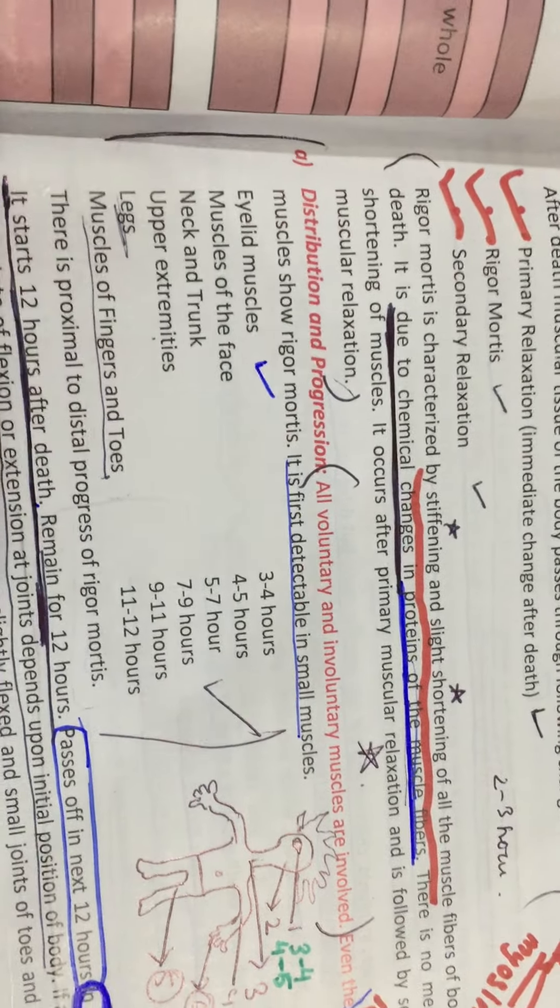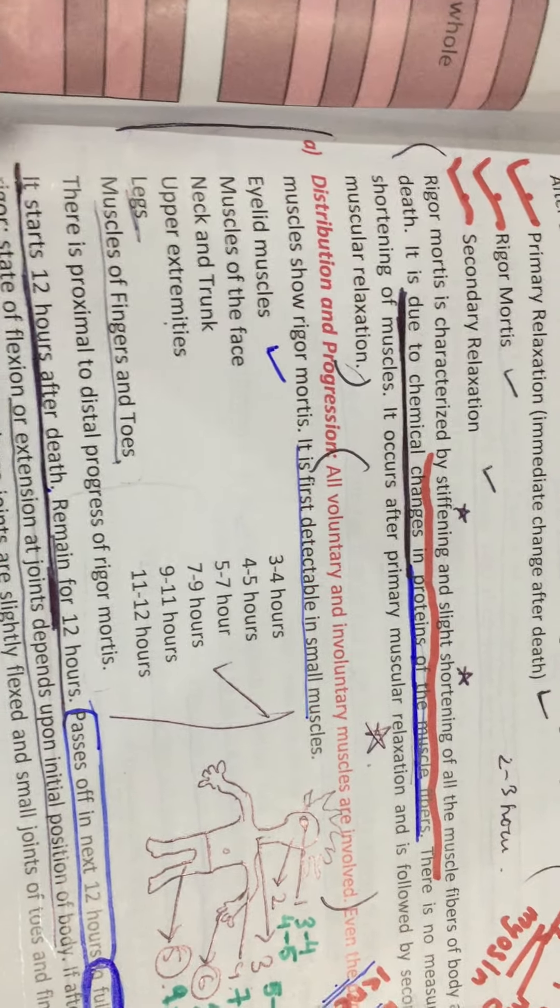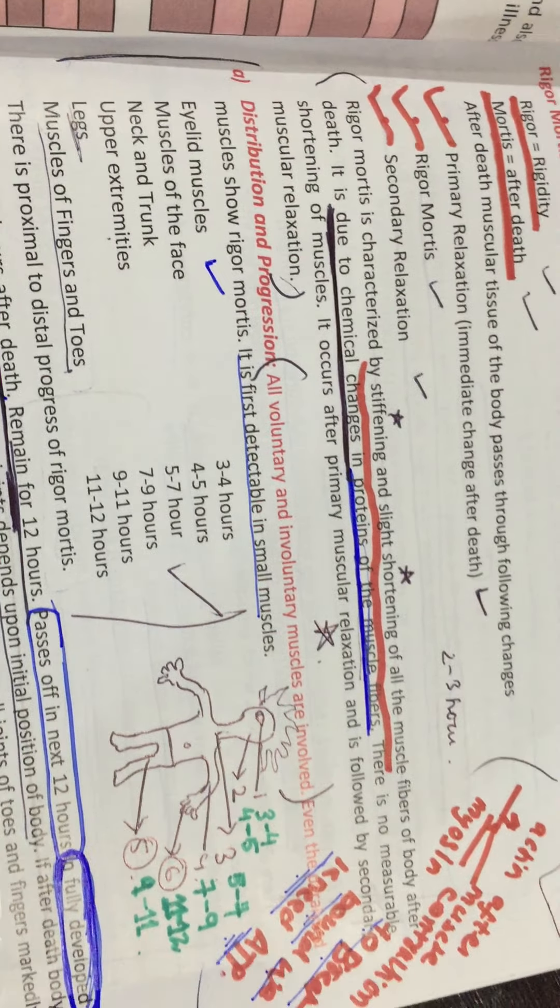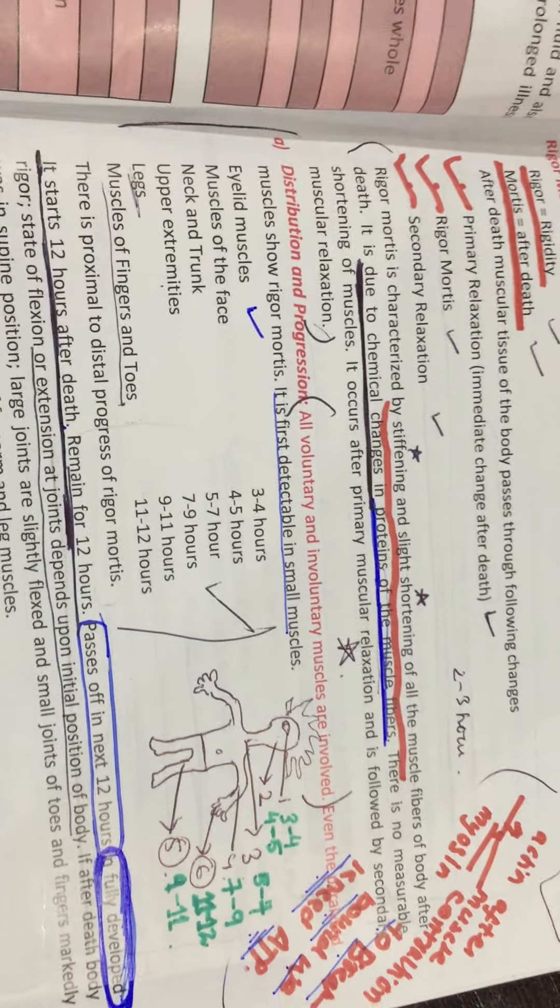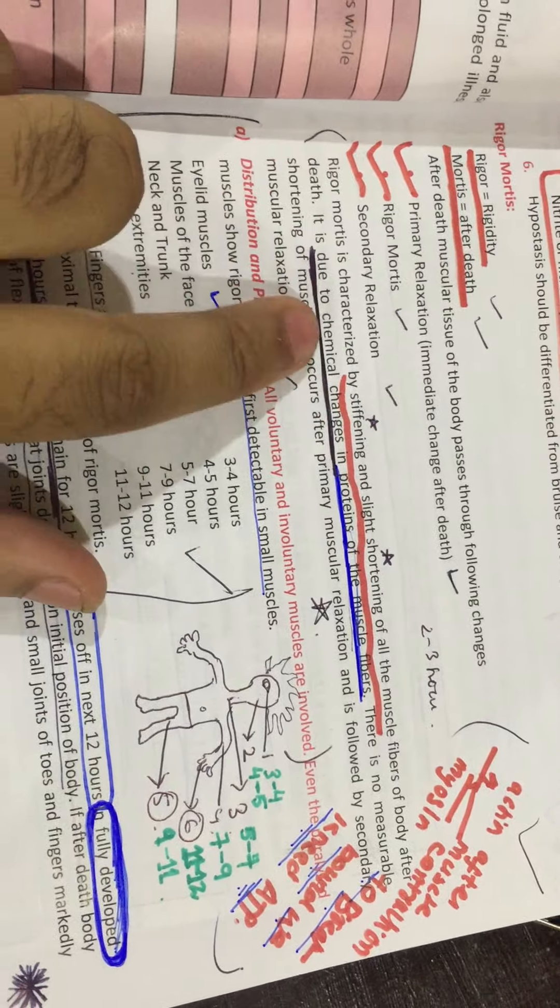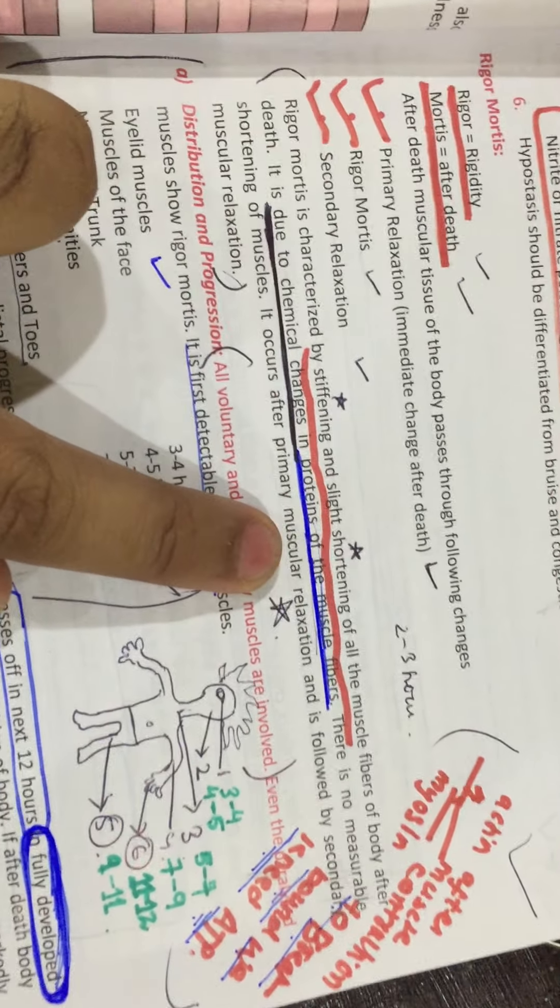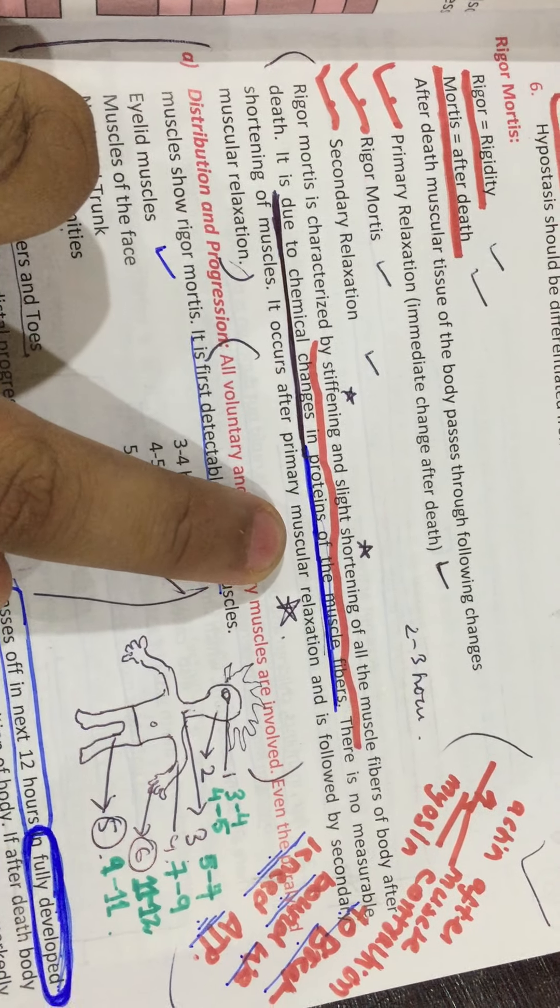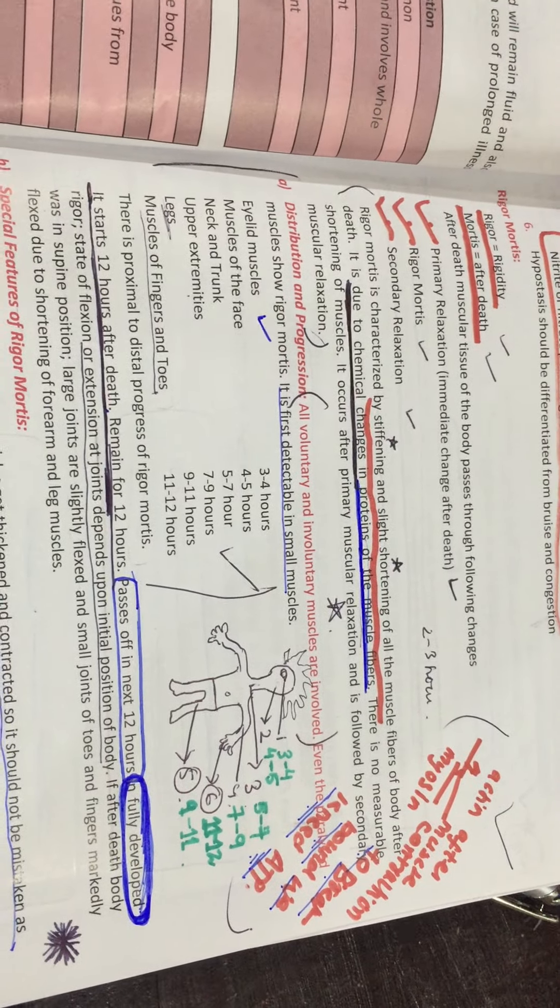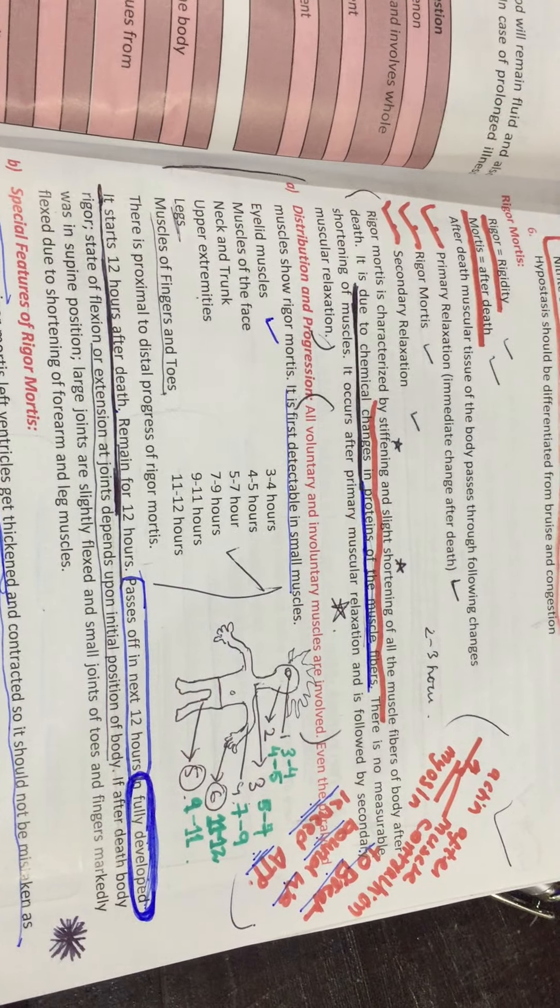Rigor mortis is the stiffness of the muscle. The belly of the muscle is shortened. Stiffness and the muscle is shortened. This is due to chemical changes in the protein of the muscle fiber.